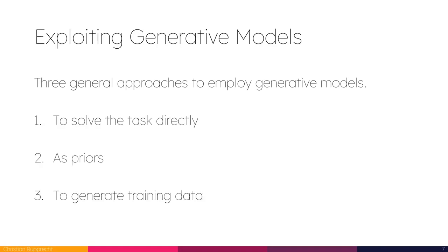Today we'll talk about three of these ideas. The first is to solve the task directly — you take a generative model and train it on the task you want to solve. The second is to use a generative model that somebody else has trained and apply it as a prior to the task you're solving — Philip's talk was very much on that side. The third, relatively new, is to use these models to generate training data for our tasks, which has started to work well now.